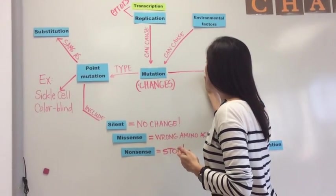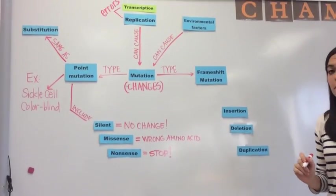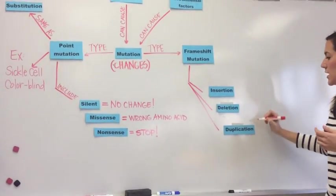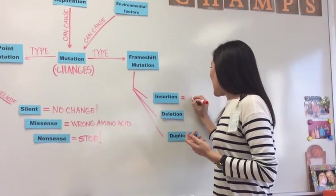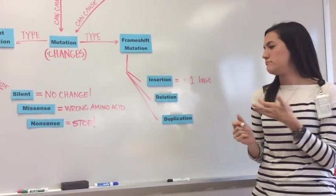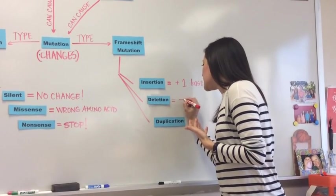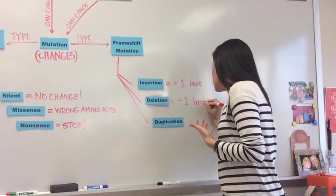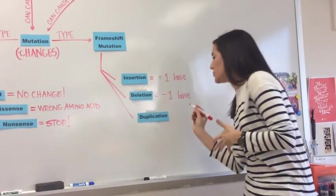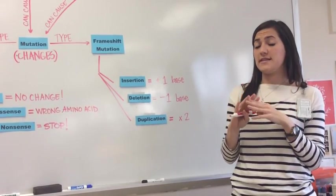So our last category of mutations is called frameshift. So this is our last type that we're going to talk about. So we again have three types of frameshift mutations. Our frameshift include insertion, deletion, and duplication. So insertion, this is when we add one base to our DNA. So one base is added in deletion. If you think about what you do on a computer, when you hit delete, you delete a letter. That's exactly what happens here. We delete a base. So it's minus one base. And the last one is duplication. So if I ask you to duplicate something, you're going to give it to me double. So duplicate means times two. So here is when we get double the bases or a codon, a group of three RNA bases or DNA bases are doubled.